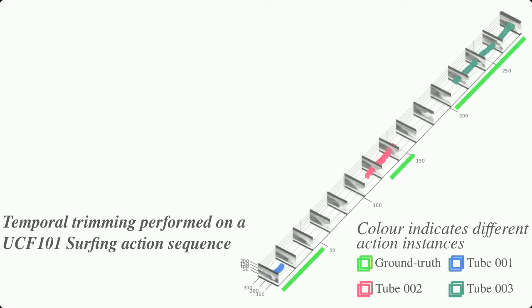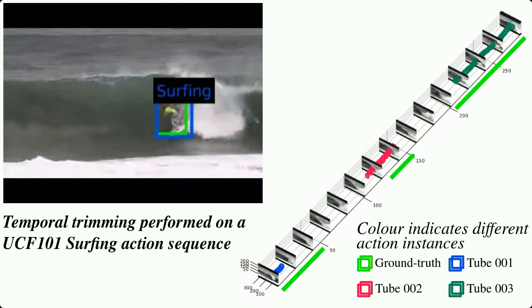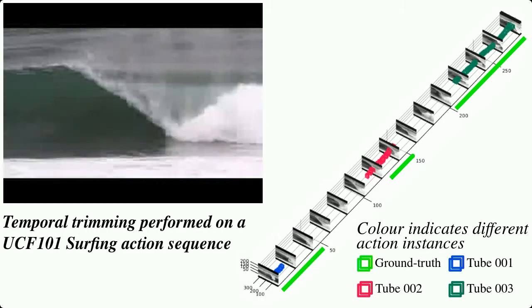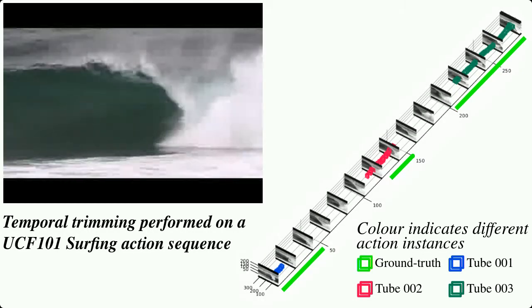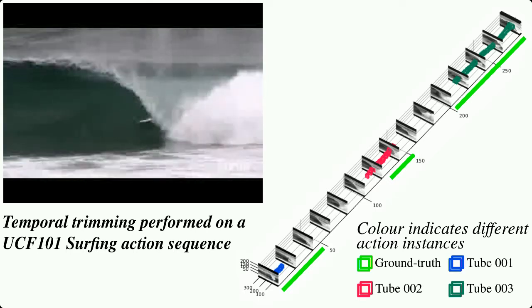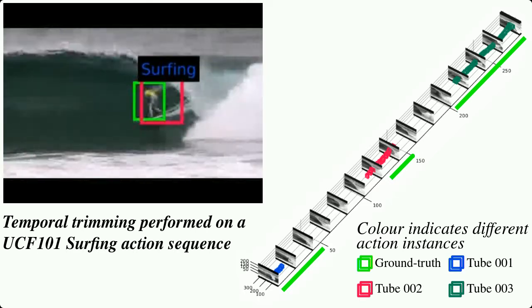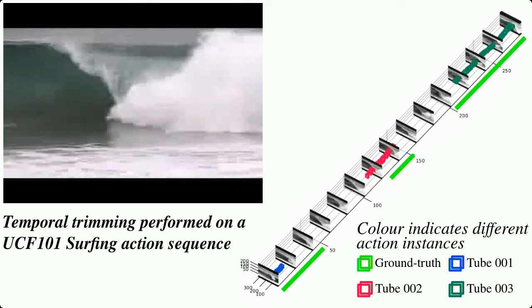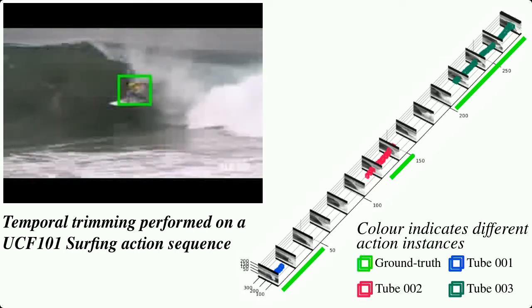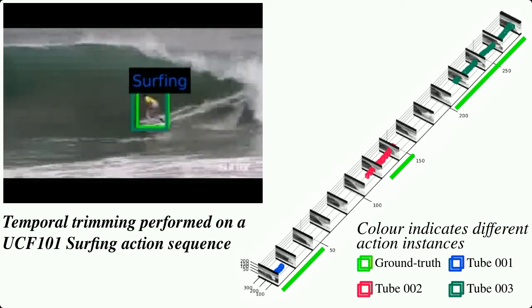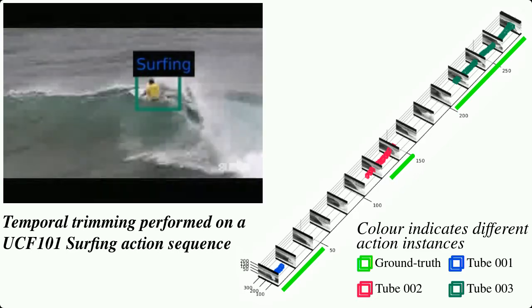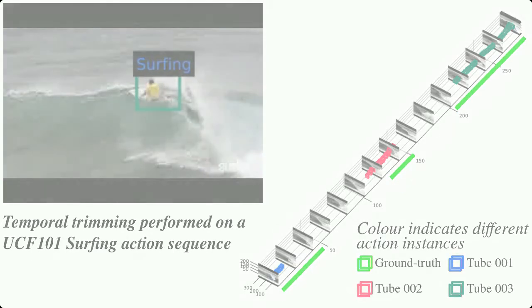In this surfing action sequence, our method successfully detects three action instances with different temporal extents. Note that the temporal extents of the detected tubes and the ground truth are closely matched.